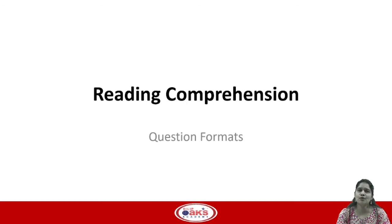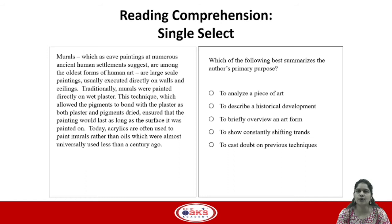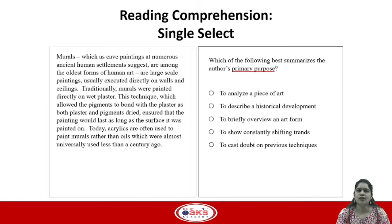Now let's look at reading comprehension and its question formats. The first format is single select: you have five options and have to select one answer choice, so you see radio buttons which allow you to choose only one answer. This question type asks you to best summarize the author's primary purpose. At this point, pause the video, take a look at the passage, and then we will discuss it.